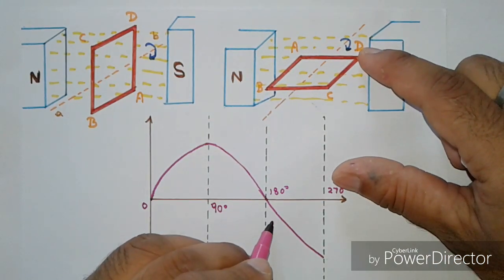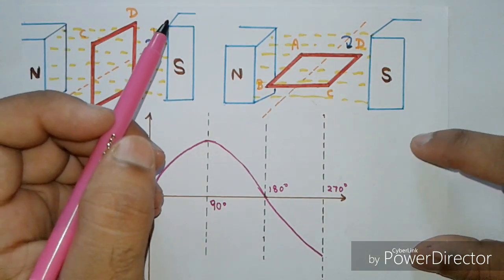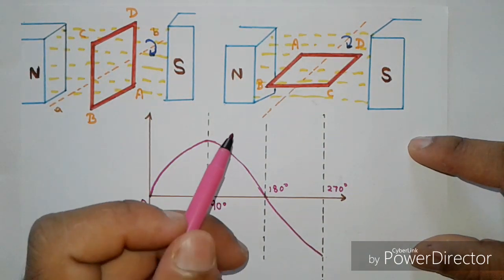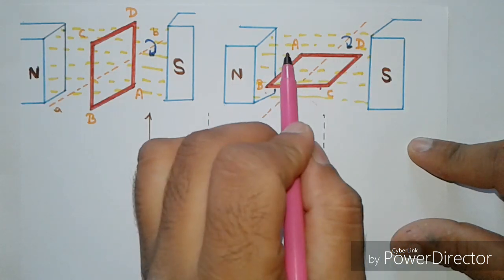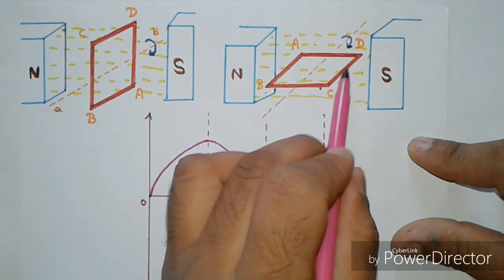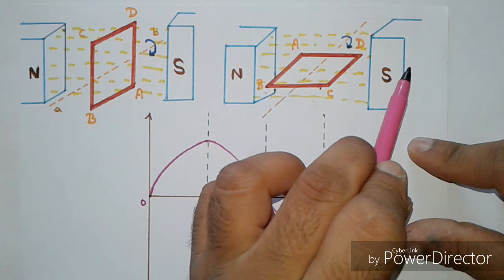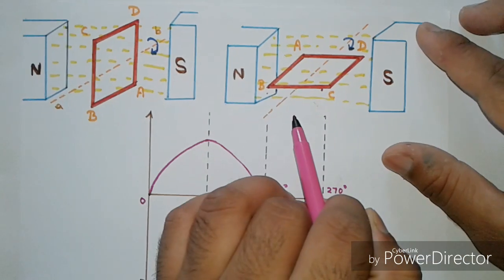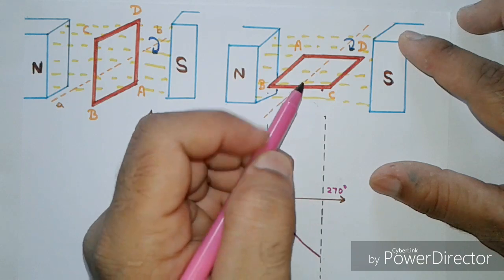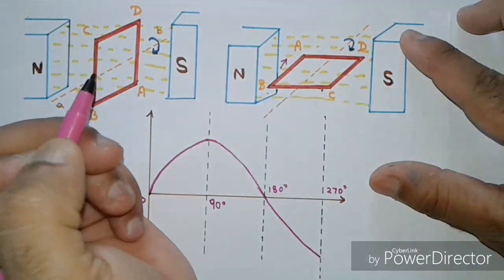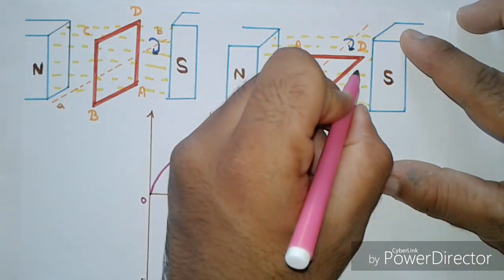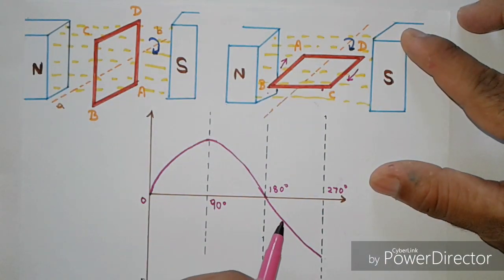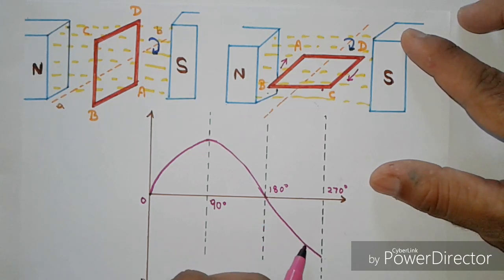The first half cycle is now completed. For the second half cycle, the conductor continues to rotate clockwise for another 90 degrees. The rectangular coil comes to a horizontal position such that conductors AB and CD come in front of the north pole and south pole respectively. Again current flows — the current induced in conductor AB is from B to A, and in conductor CD from D to C. The waveform produced is in the opposite direction and reaches its maximum value.